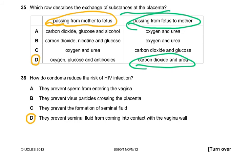Question 36: how do condoms reduce the risk of HIV infection? They prevent seminal fluid from coming in contact with the vaginal wall. The semen stays inside the condom so it won't come in contact with the vaginal wall and pass on the virus. Could be either way round, the woman could have the virus or the man could have the virus.